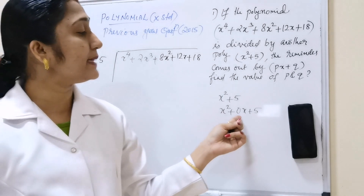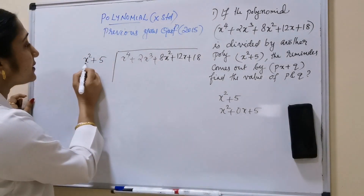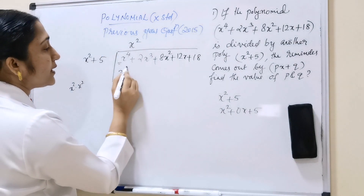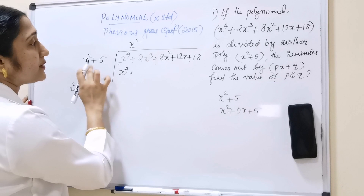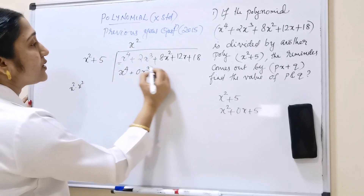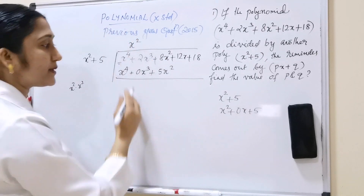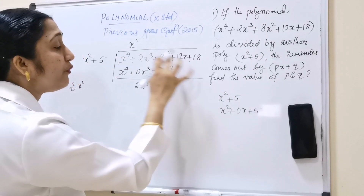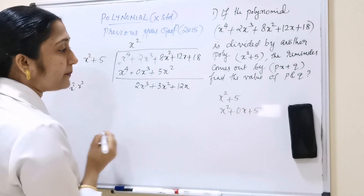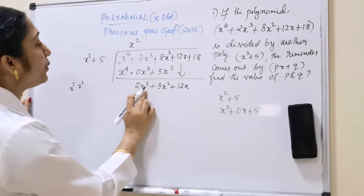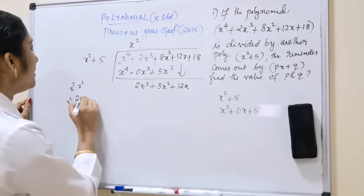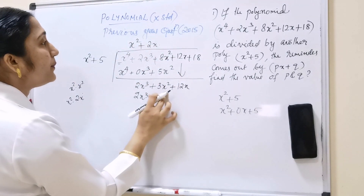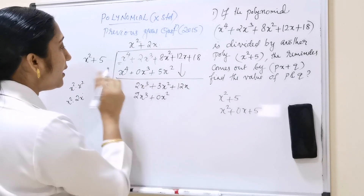Let us divide x⁴ + 2x³ + 12x + 80 by x² + 5, carefully including the 0x term. First, x² into x² gives x⁴. So we write x² and multiply: x⁴ + 0x³ + 5x². Subtracting, x⁴ cancels, giving 2x³. Next, x² into 2x gives 2x, so we multiply: 2x³ + 0x² and bring down the remaining terms.